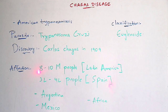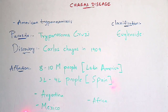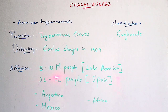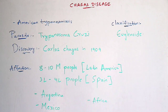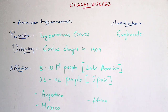Coming to the affection — that is how many people were affected in various countries. 8 to 10 million people were affected in the Latin America region, and 3 lakh to 4 lakh people were affected in Spain. Many people in countries such as Argentina, Mexico, Central America, and Africa regions were affected with Chagas disease.